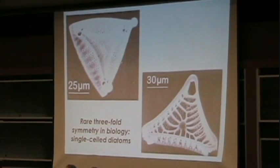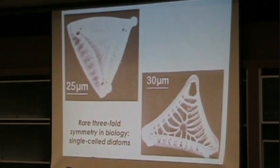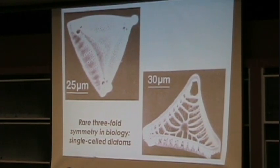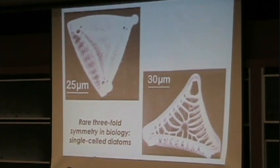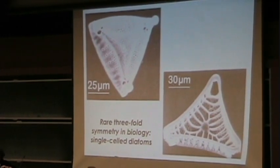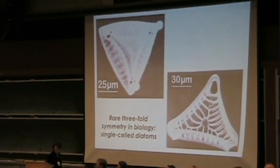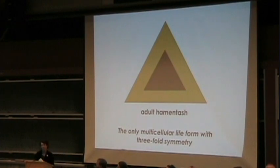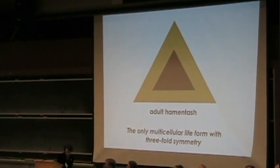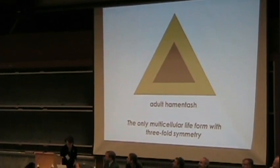There are single-celled organisms — little diables — that have three-fold symmetry and secrete a little skeleton. They are not particularly interesting. In fact, three-fold symmetry of multicellular lifeforms is exceedingly rare. There is only one case that we know, and it is the Khamintoshan. Here I've put on the axis of symmetry.